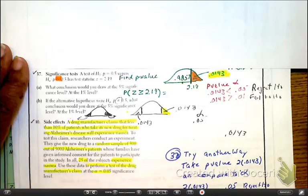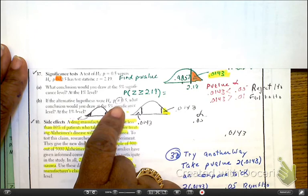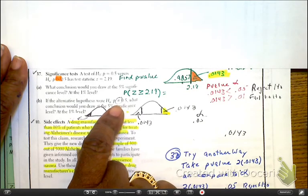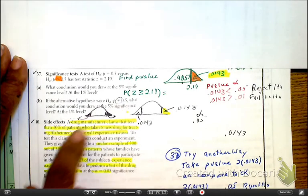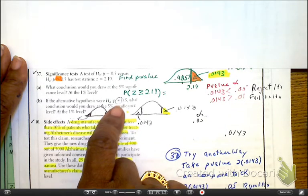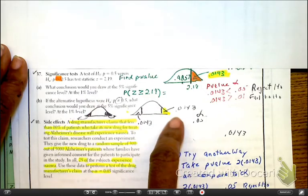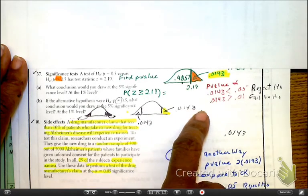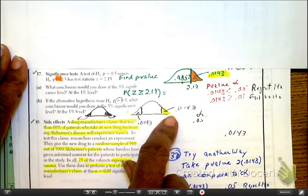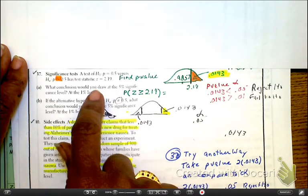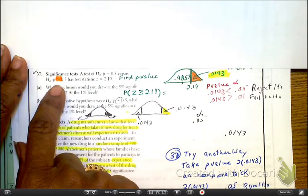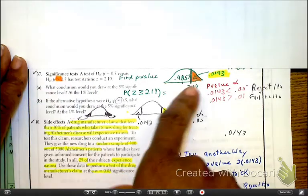Let's look at problem 37B, because part B is saying that your alternative hypothesis is not equal to. So as we're looking at it, not equal to means it is a two-tail test. When we find our p-value — which we found before — it was 0.0143. That was the tail for only one tail, from the original problem number 37, when it said p was greater than. That was a one-tail test.